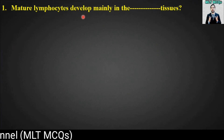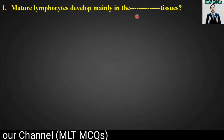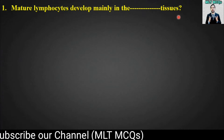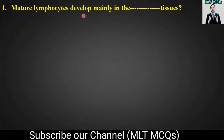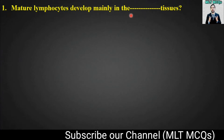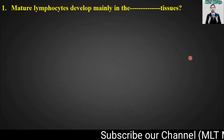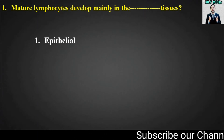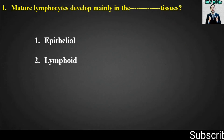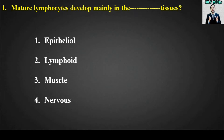MCQ number one: mature lymphocytes develop mainly in the blank tissues. Options are epithelial, lymphoid, muscle, or nervous. The right option for this MCQ is option number two, lymphoid. So mature lymphocytes develop mainly in the lymphoid tissues.